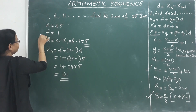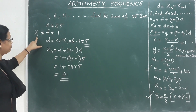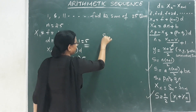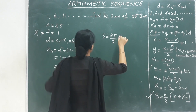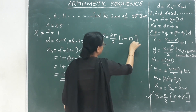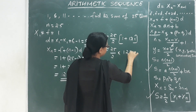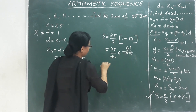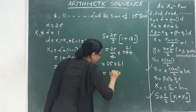Now we apply the sum formula. S equals 25 by 2, into x1 plus xn. That is 25 by 2 into 1 plus 121, which equals 25 by 2 into 122. This equals 25 into 61, which equals 1525.